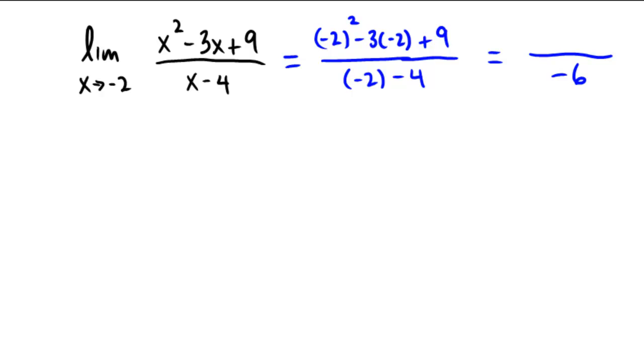In the top, we have negative 2 squared, which is 4, minus 3 times negative 2, which is negative 6, plus 9. 4 minus negative 6 would be 4 plus 6, which is 10. Add 9 more would be 19, so we're getting a 19 in the numerator. My final answer to this would be negative 19 over 6, or negative 19 sixths.